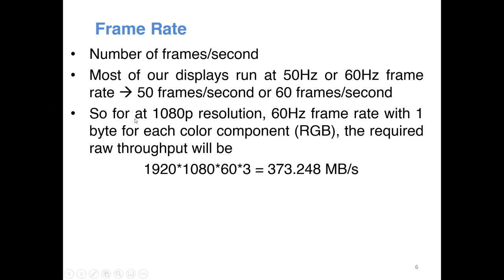If you are looking at 1080p — that's 1920 by 1080 pixels — running at 60 Hz with a tri-color RGB display each with one byte per channel, the raw throughput when transmitting video to your monitor is around 373 megabytes per second. This is relatively high, though not very high compared to modern interfaces.